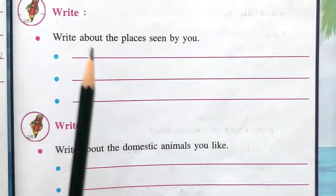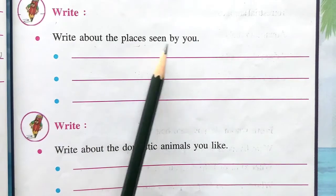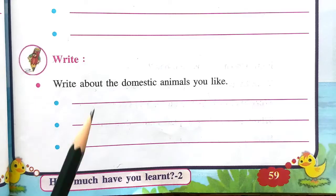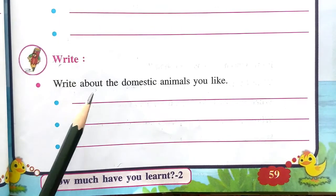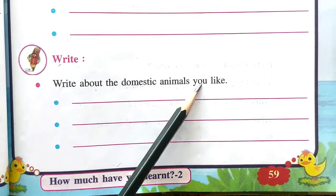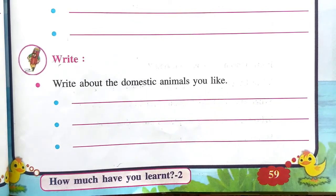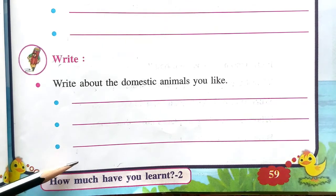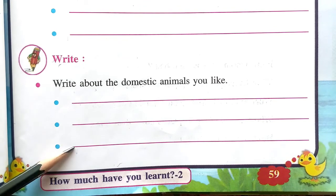Then write about the places seen by you — which places you have visited, you have to mention here; write that by yourself. Then write about the domestic animals you like — write the names of domestic animals you like here.